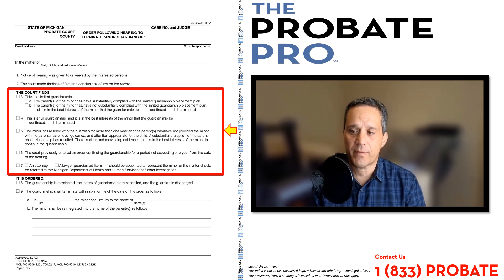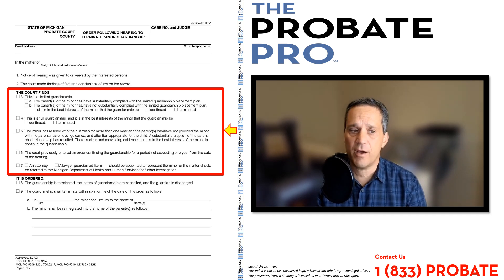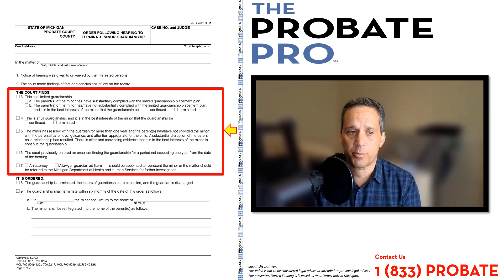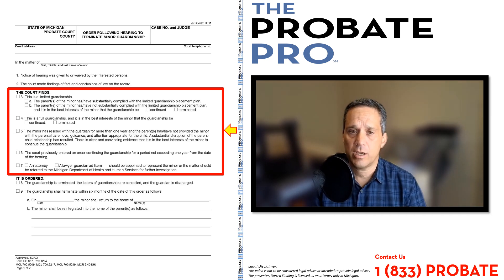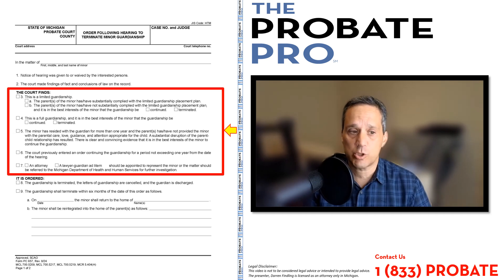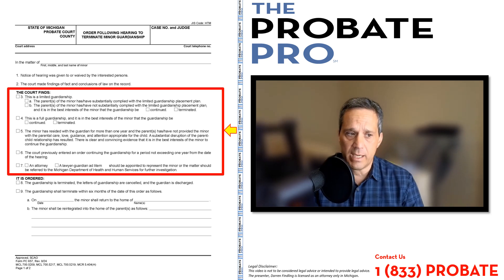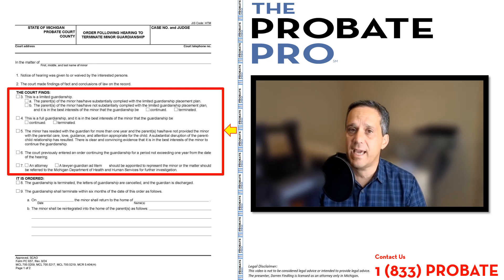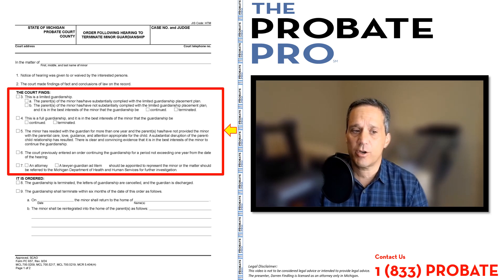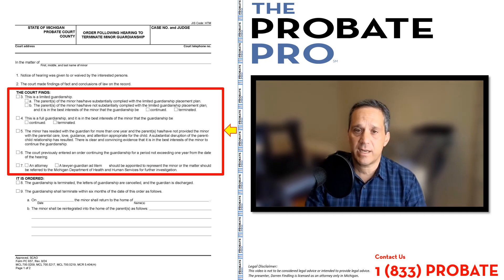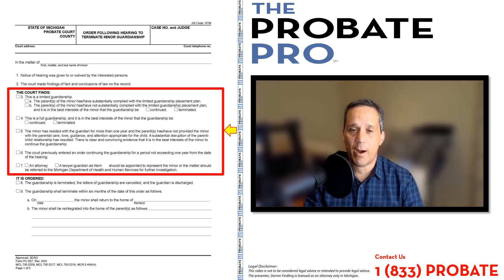Paragraph five provides that the minor has resided for more than one year and the parents have not provided the minor with parental care, love, guidance, and attention. This is one of the statutory provisions for termination or the imposition of a guardianship. A substantial disruption of the parent-child relationship has resulted, and there is clear and convincing evidence — that's the burden, the standard required — that it is in the best interest of the minor to continue the guardianship. Paragraph six covers the court previously entering a court order continuing the guardianship for a period not exceeding one year from the date of the hearing — essentially a one-year rhythm.